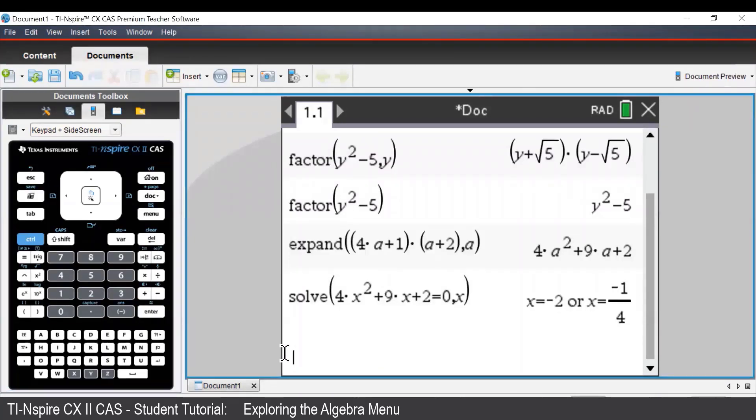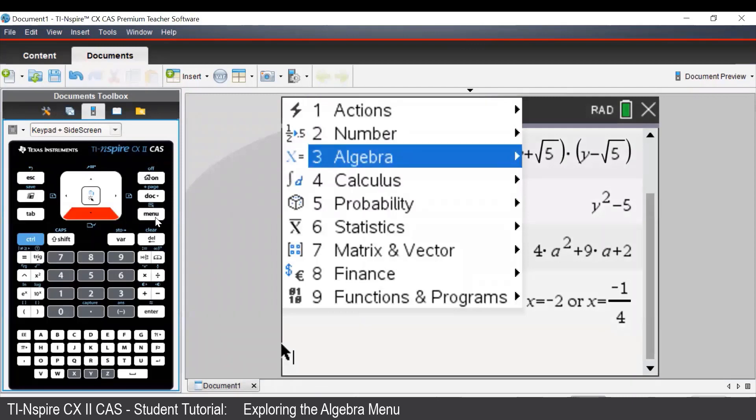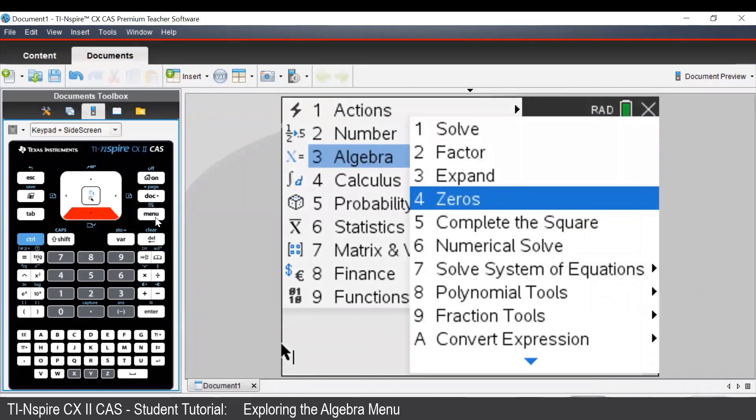Let's say we wanted to solve 4x squared plus 9x plus 2 equal to 0. We could do this using the solve command, or in the algebra menu, we could use the zeros command.